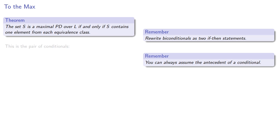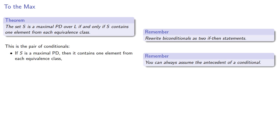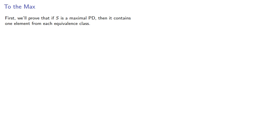This is the pair of conditionals. If S is a maximal pairwise distinguishable set, then it contains one element from each equivalence class. And if S has an element from each equivalence class, then it is a maximal pairwise distinguishable set. So first we'll prove that if S is a maximal pairwise distinguishable set, then it contains one element from each equivalence class.